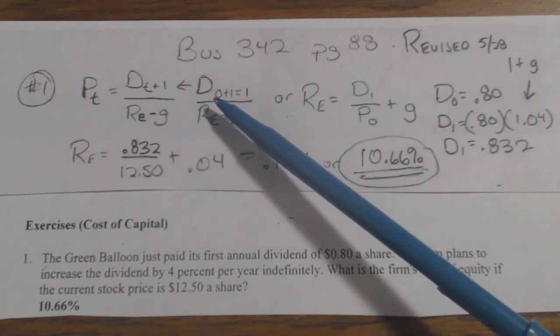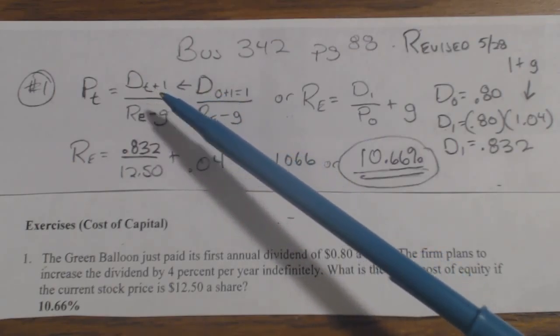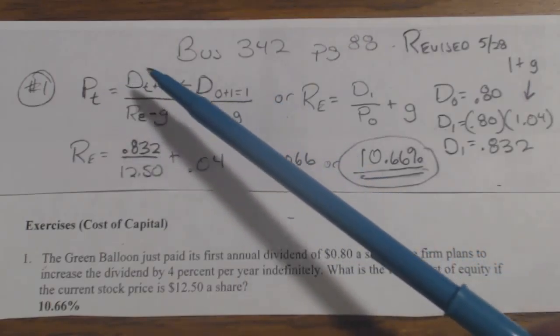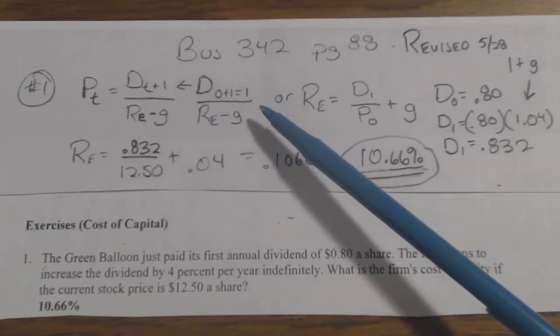So Dt plus 1 is 0 plus 1, which is D1 in this formula. So this is the formula we're looking at now.